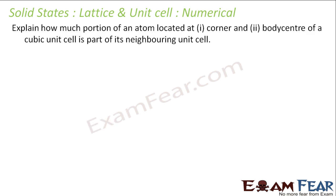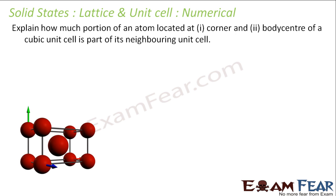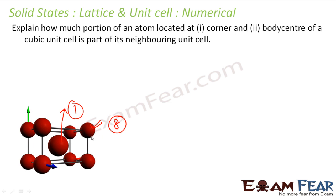The question is: how much portion of an atom located at the corner and at the body center of a cubic unit cell is part of its neighboring cell? For the corner atom, it is shared by eight unit cells, so the contribution to this unit cell is one-eighth — meaning seven-eighths belongs to neighboring cells. For the body-center atom, it is not shared by any other unit cell — full contribution is one, so zero portion goes to neighboring cells.